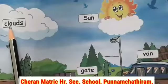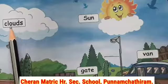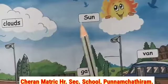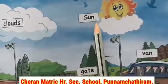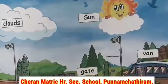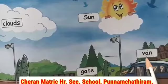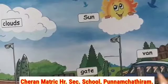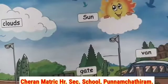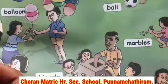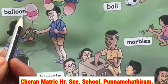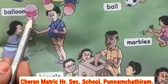V-A-N — van. The O-U sound. This one is van. G-A-T-E — gate, with the A sound. B-A-L-L-O-O-N — balloon. This one is balloon.